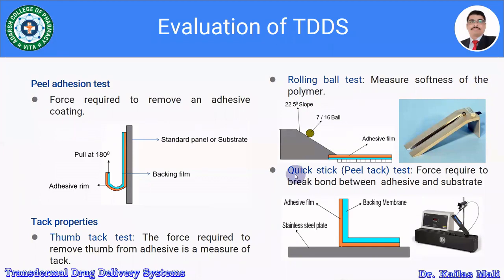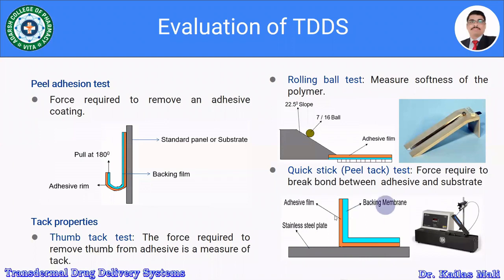In the peel tack test (also called the quick stick test), the force required to break the bond between the adhesive and the substrate is measured. The equipment consists of a stainless steel plate, backing membrane or backing layer, and adhesive film.